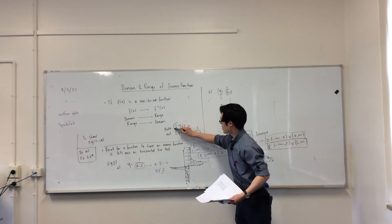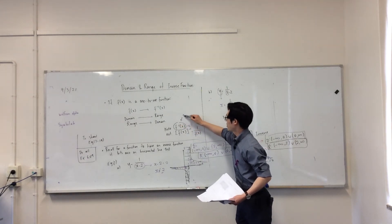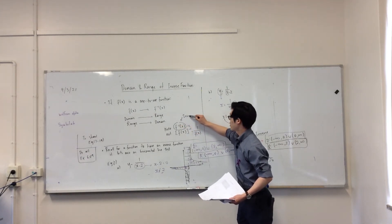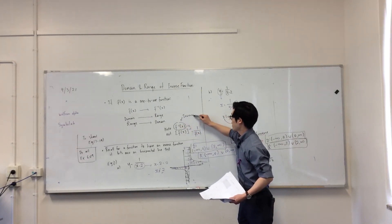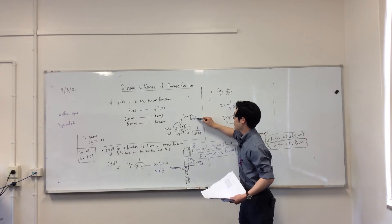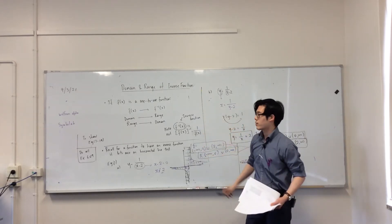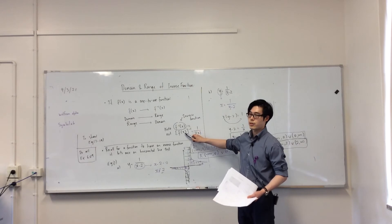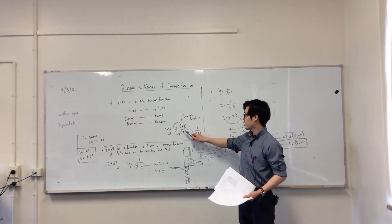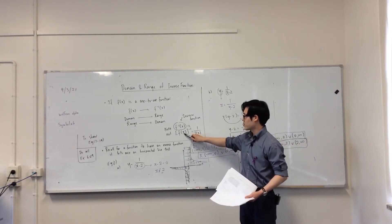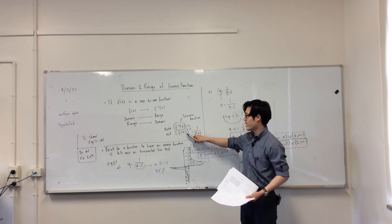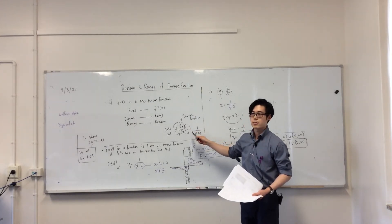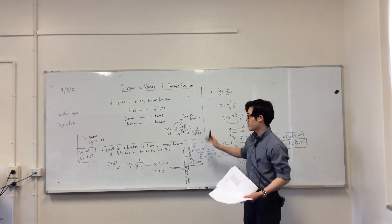This symbol represents the inverse function. This is not to be confused with what we learn in graphs — the reciprocal of a certain graph. This notation does not mean the same thing as the reciprocal of something. Keep that in mind.